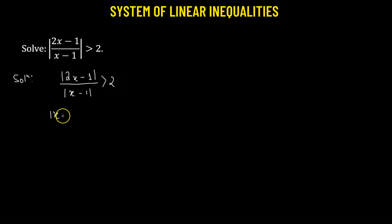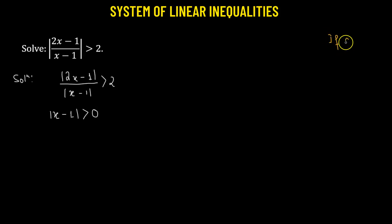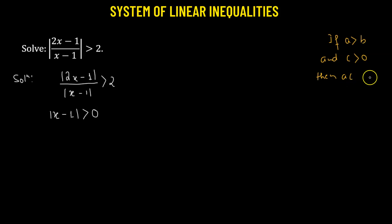We know that absolute value of (x minus 1) is always a positive number. We will use the fact that if a is greater than b, and c is greater than 0, then multiplying both sides by c preserves the inequality — that is, ac is still greater than bc, so the sign of the inequality does not change.